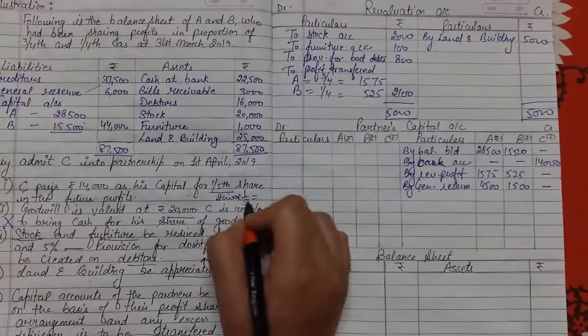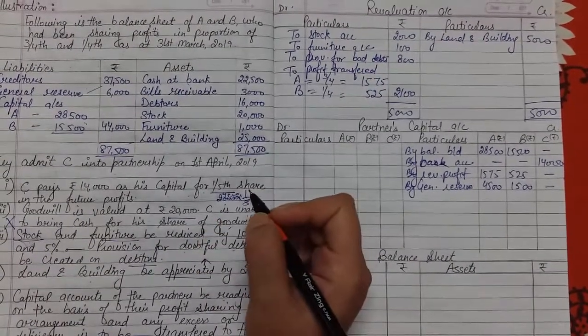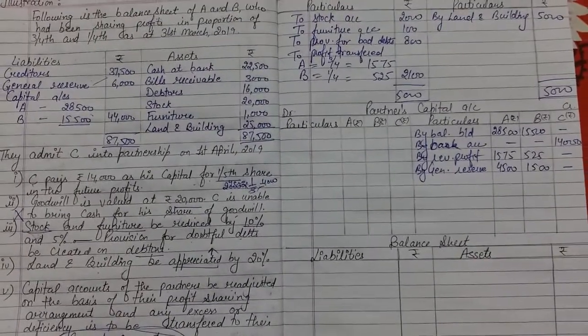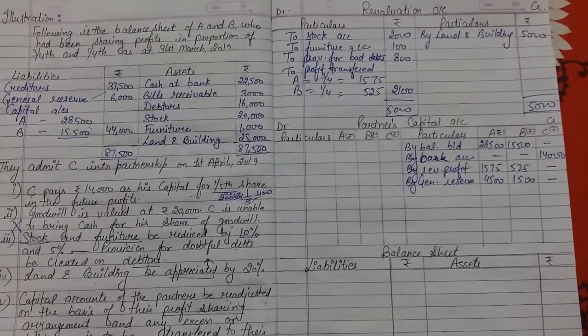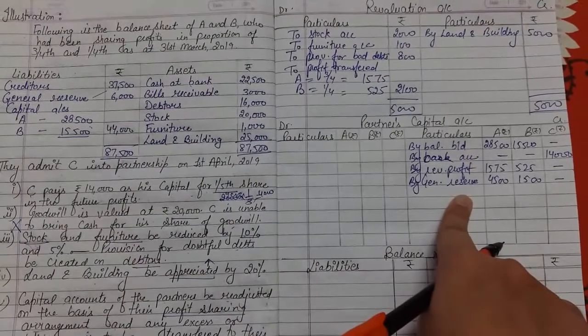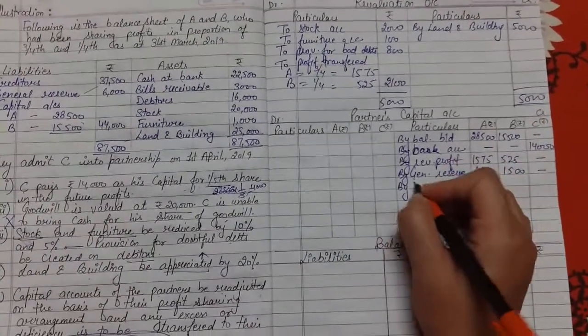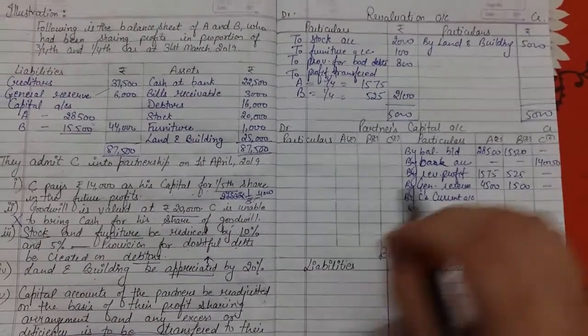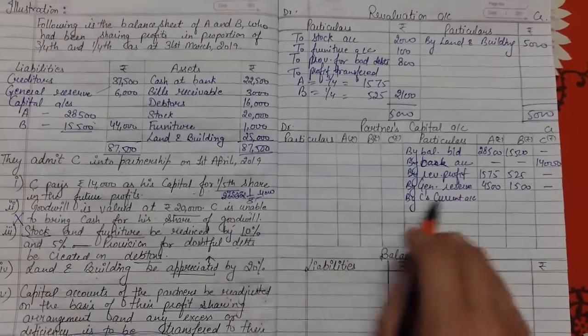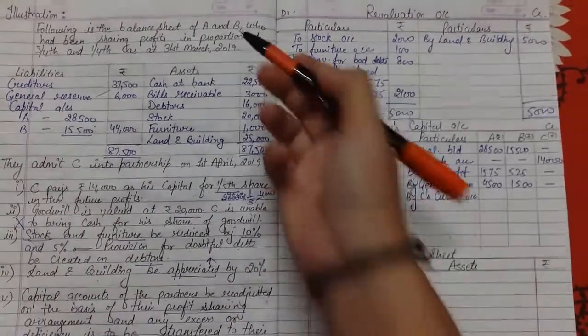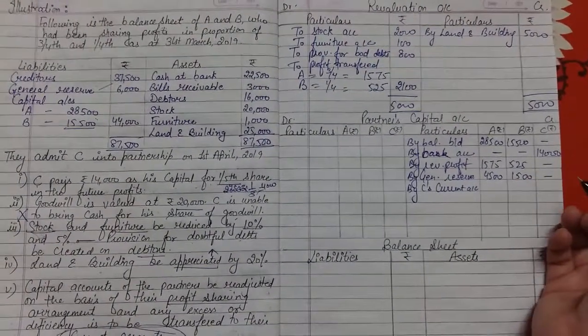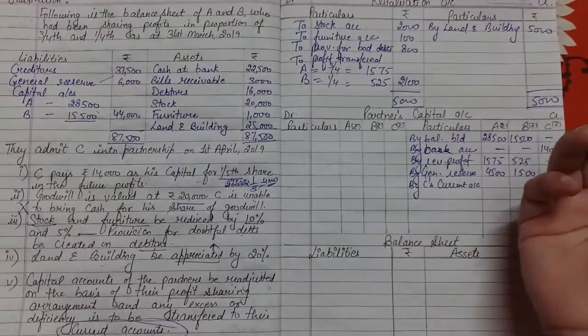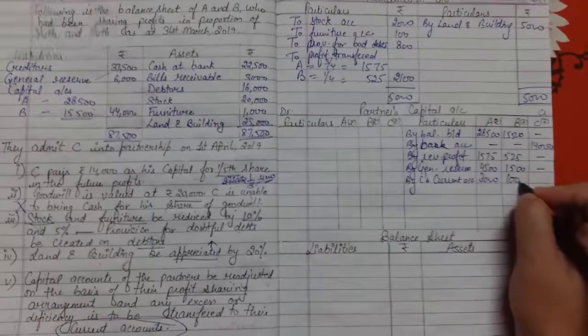After that, goodwill amount is 20,000. If the whole firm's goodwill is 20,000, one-fifth is 4,000 rupees. Now in which ratio will we distribute? To sacrificing partners in sacrificing ratio. Here we put by premium for goodwill - no, we can't write that. What will we put? By C's current account. Why? Because the goodwill amount he's not bringing. His share of goodwill is this much but he's not bringing it, so C's current account will show 4,000. In sacrificing ratio to distribute, this will be 3,000 and this will be 1,000.